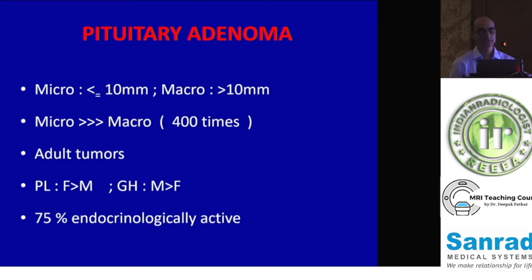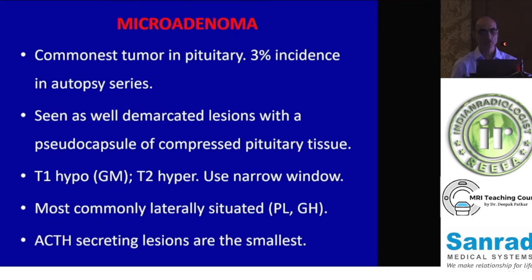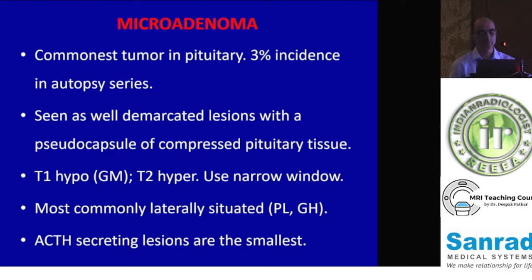Moving on to pituitary adenomas: microadenomas are less than 10 mm, macroadenomas are more than 10 mm, and micro are far more common — more than 75% are endocrinologically active. Microadenoma is the commonest tumor, typically seen as well-demarcated lesions that are hypo on T1 and hyper on T2, though the signal difference is not very great. You have to use narrow window settings to pick up the lesion, and you have to do the contrast study to detect it.